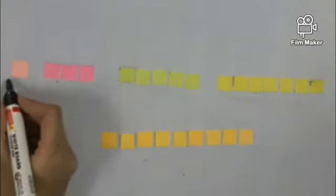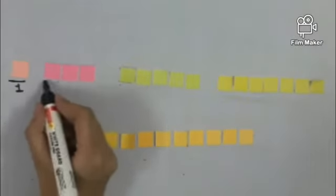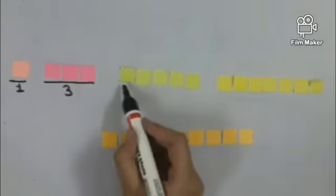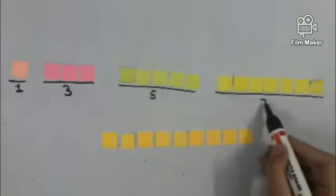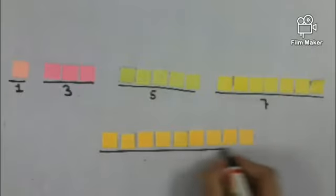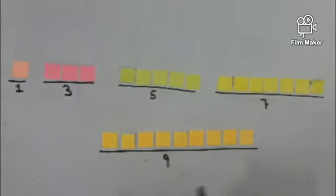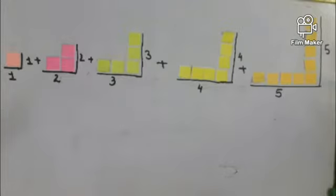For the visual proof, we will first take the first five odd numbers. The first odd number is one, second is three, third is five, fourth is seven, and fifth is nine. Now we will assemble the odd numbers into an L shape and check whether they make a single shape or not.